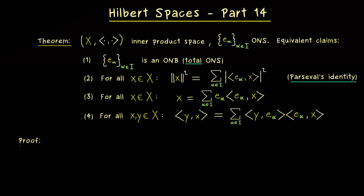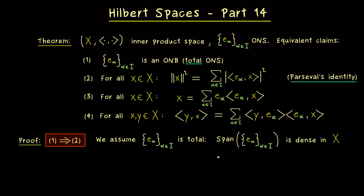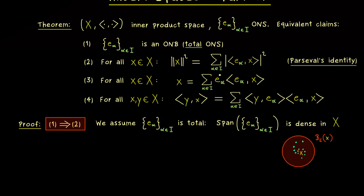For the proof, we have to combine some implications. Let's start with the most important one, namely that an ONB implies Parseval's identity. What we assume now is that our given ONS is total. By definition this means that the set of all possible linear combinations we can form is dense in X. This notion of dense simply means that for any point x in X and any epsilon ball around it, you always find an element in the span that lies inside the epsilon ball — you can be as close as you want with the span to the given point x.